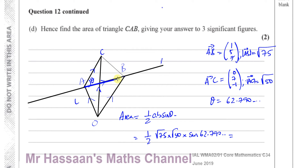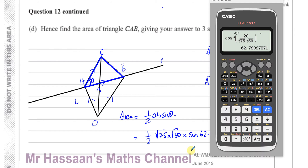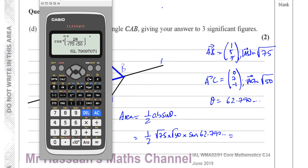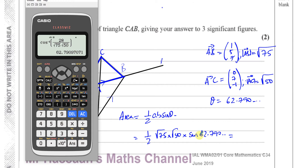So what we're finding is the area of this triangle ABC. We know the length of AC, which is root 50, and we know the length of AB, which is root 75. The area of a triangle can be given by a half times the length of two sides times the sine of the angle between them, and that's exactly what we're doing here. So let's get the calculator. We still have the value of the angle that we found in the last part, so we can use that — the sine of the angle, sine of the answer.